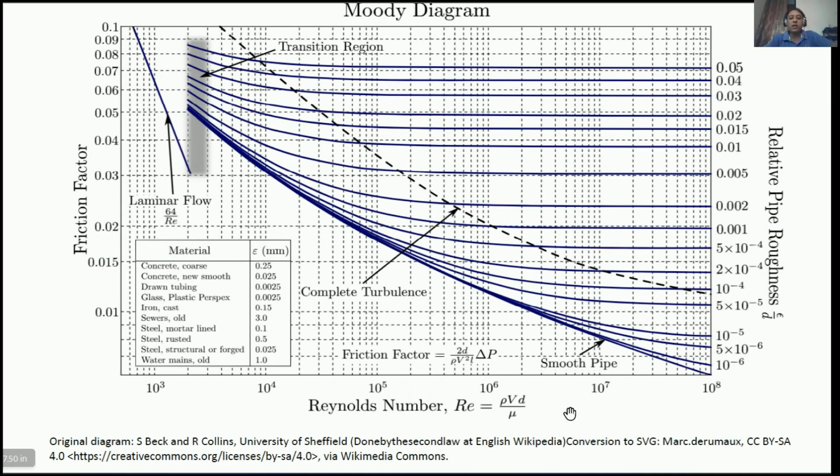Now this is how Moody's diagram or Moody's chart looks like. You have to learn the key things about this chart. See, the left-hand side y-axis is the friction factor. The x-axis is the Reynolds number of flow, which equals ρvd/μ for pipe flow. And the right-hand side y-axis tells the relative pipe roughness.